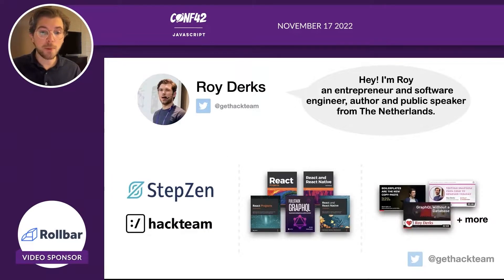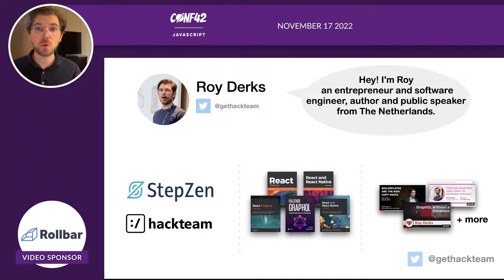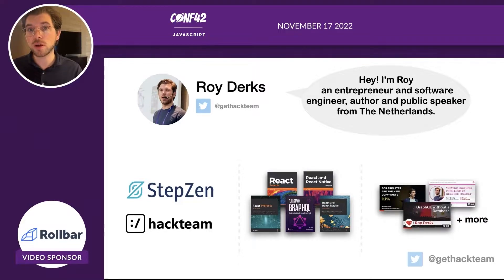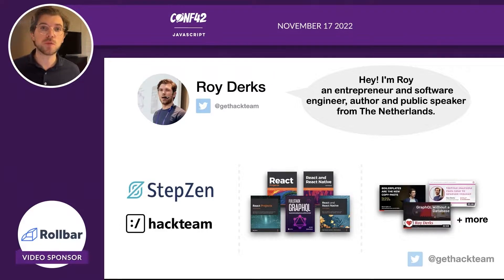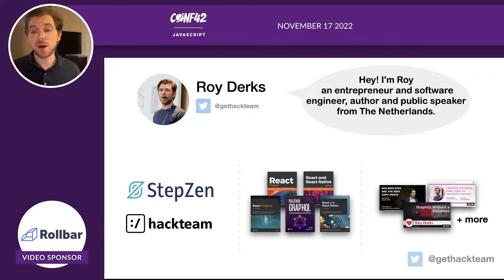A little bit about myself: my name is Roy, I'm from Amsterdam, and you can find me on Twitter using the handle @gethackteam. I work for a company called Stepzen, and at Stepzen we make it easy to build GraphQL APIs. Maybe later in the talk, if there's still time, I'll show a short demo about creating a GraphQL API and then transforming it into TypeScript types. I also work through my own company HackTeam, where I do trainings and workshops on GraphQL, TypeScript, React, and I also write books about these programming libraries.